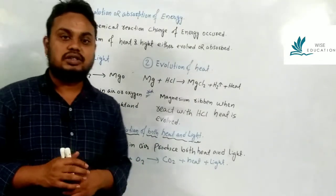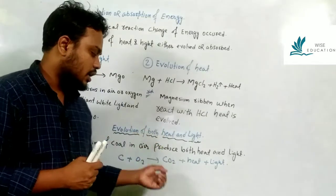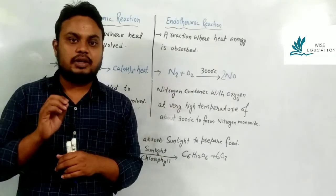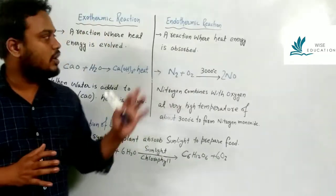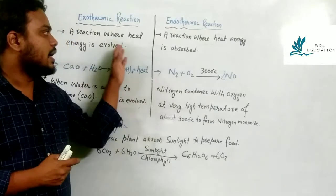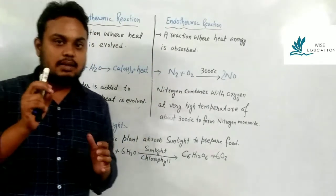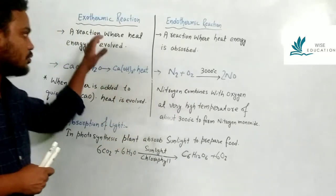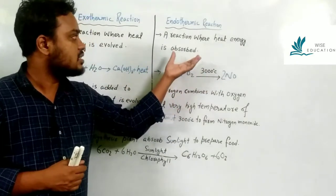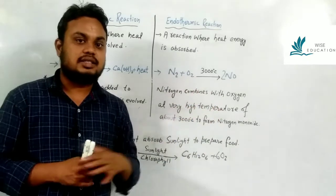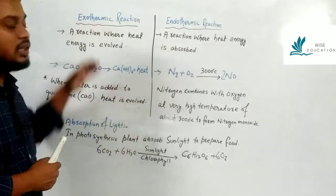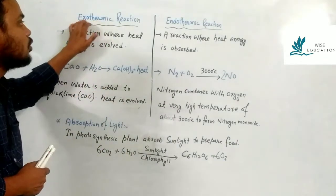Carbon reacts with air to form carbon dioxide, and both heat and light are released — this is exothermic. Now, what is the difference between exothermic and endothermic reactions? You have to write the definitions with reactions. Exothermic means 'exo' — out, 'thermic' — heat. So exothermic reactions are those where heat energy is released.